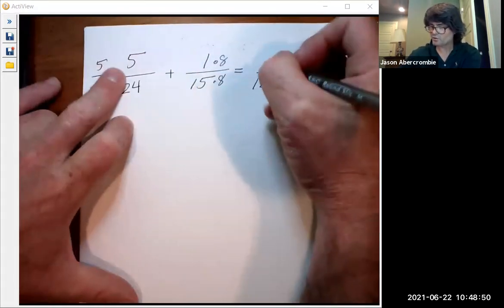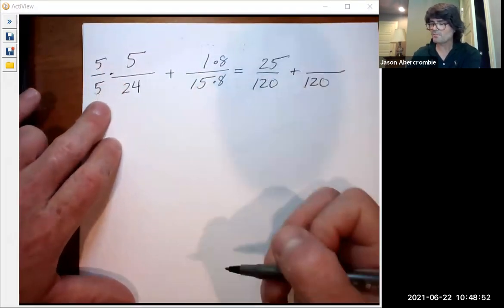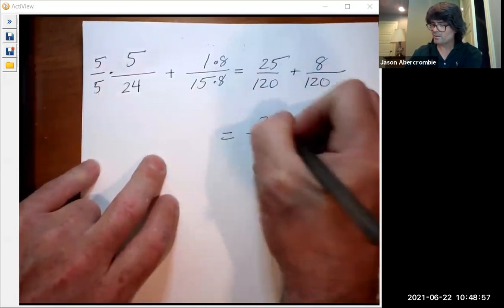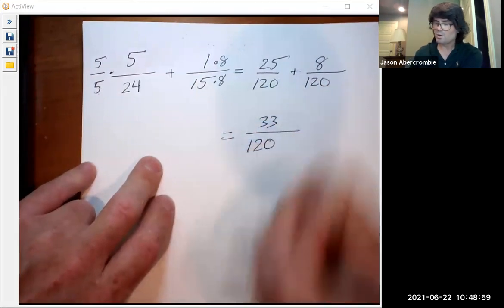8 times 1 is 8 over 120, and that's going to be 33 over 120.